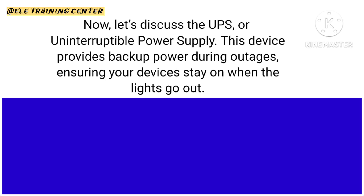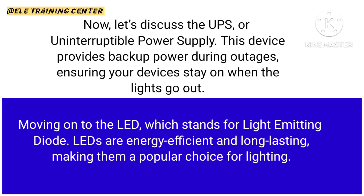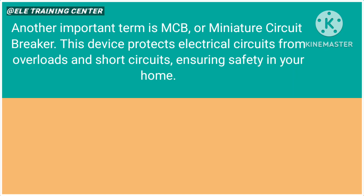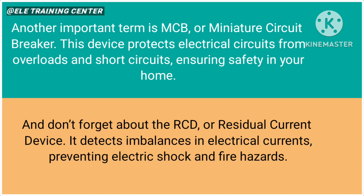Now let's discuss the UPS, or uninterruptible power supply. This device provides backup power during outages, ensuring your devices stay on when the lights go out. Moving on to the LED, which stands for light emitting diode. LEDs are energy-efficient and long-lasting, making them a popular choice for lighting. Another important term is MCB, or miniature circuit breaker. This device protects electrical circuits from overloads and short circuits, ensuring safety in your home. And don't forget about the RCD, or residual current device. It detects imbalances in electrical currents, preventing electric shock and fire hazards.